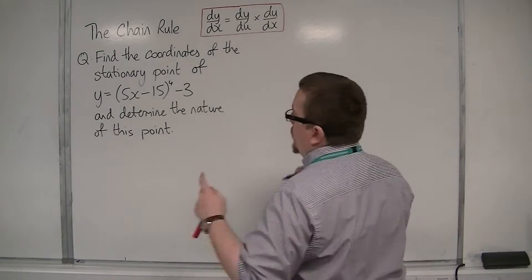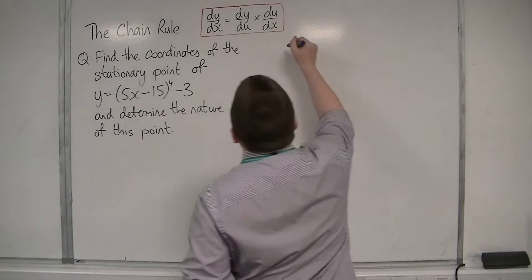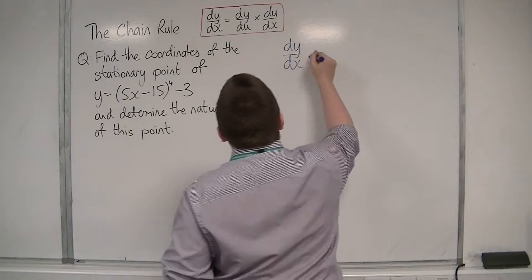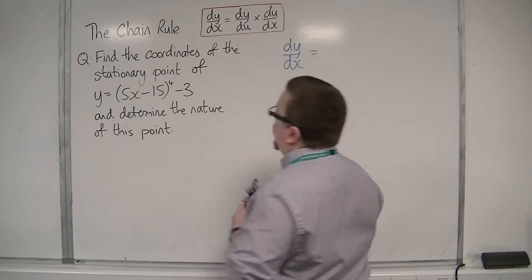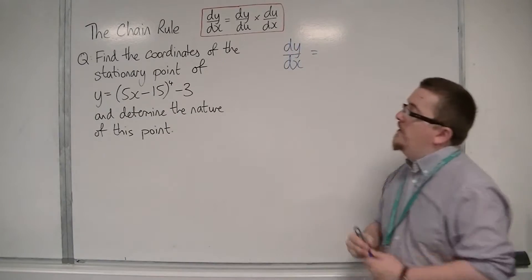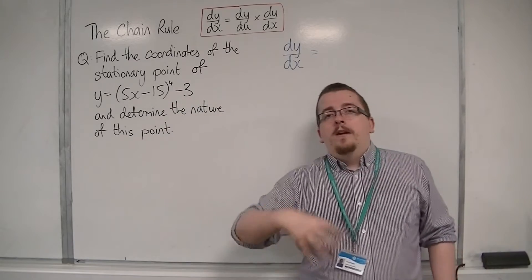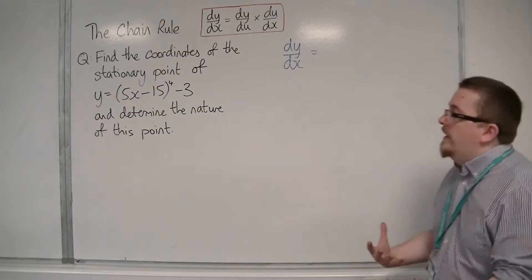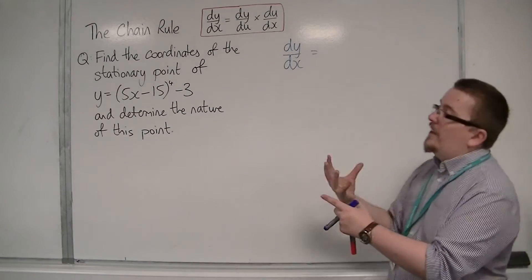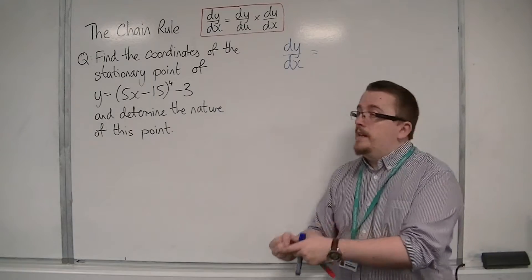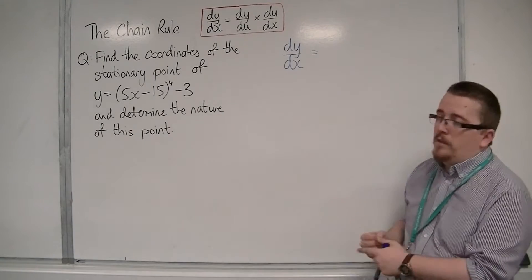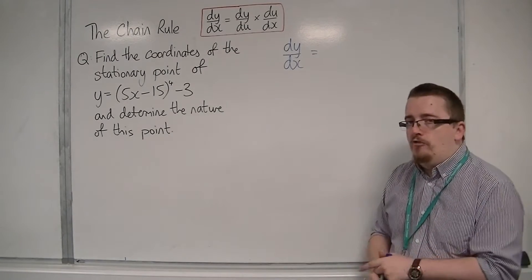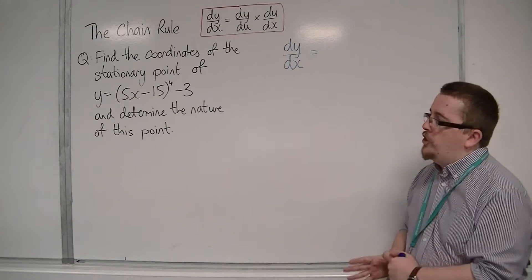So first I'm going to find dy/dx. Now, because (5x - 15)^4 is a composite function — it's a composition of (5x - 15) and x to the power of 4 — I'm going to have to use the chain rule in order to differentiate it.